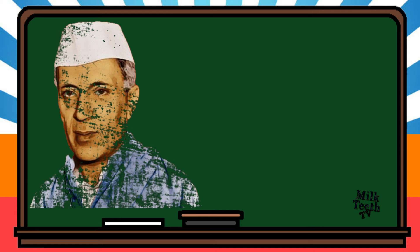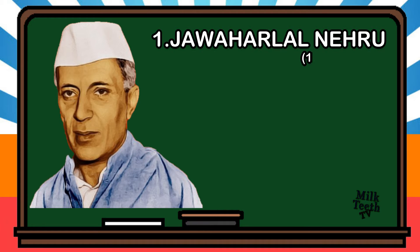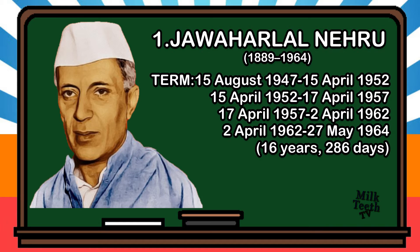The first Prime Minister of independent India was Mr. Jawaharlal Nehru. He was born in 1889 and was sworn in as PM on 15th August 1947. His term ended with his death in May 1964. He has been the longest serving Prime Minister, serving for 16 years and 286 days. Party: Indian National Congress.